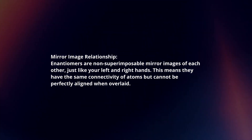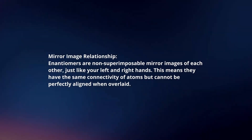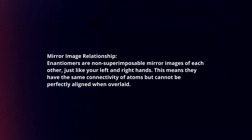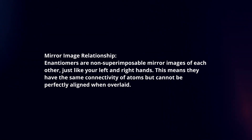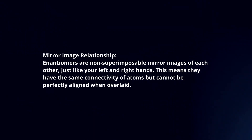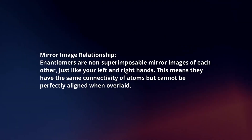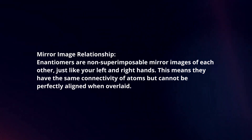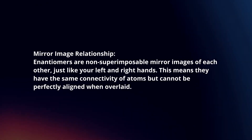Enantiomers: mirror image relationship. Enantiomers are non-superimposable mirror images of each other, just like your left and right hands. This means they have the same connectivity of atoms but cannot be perfectly aligned when overlaid.